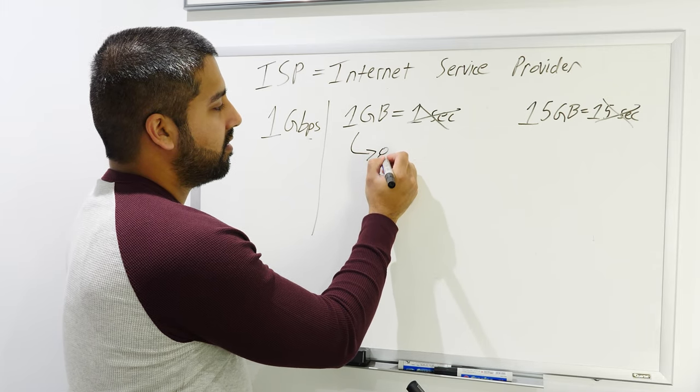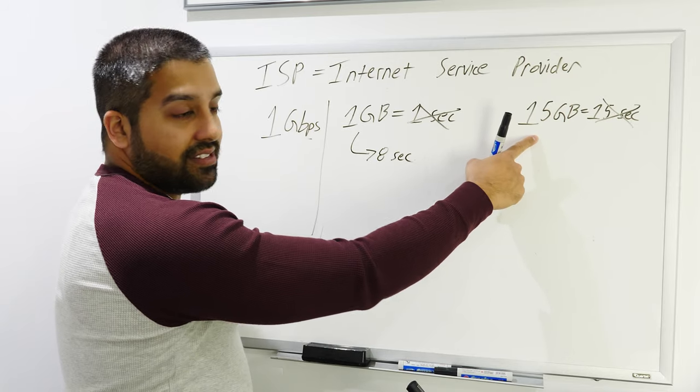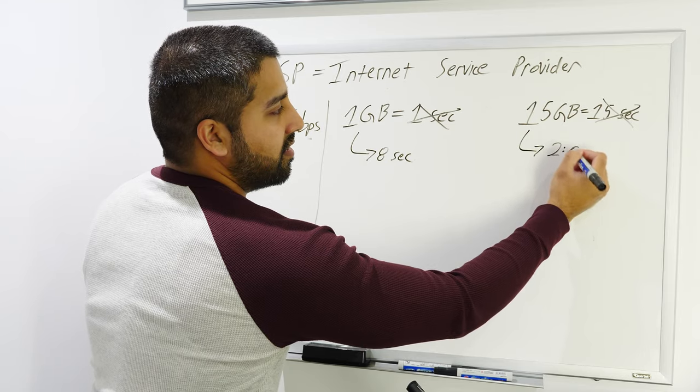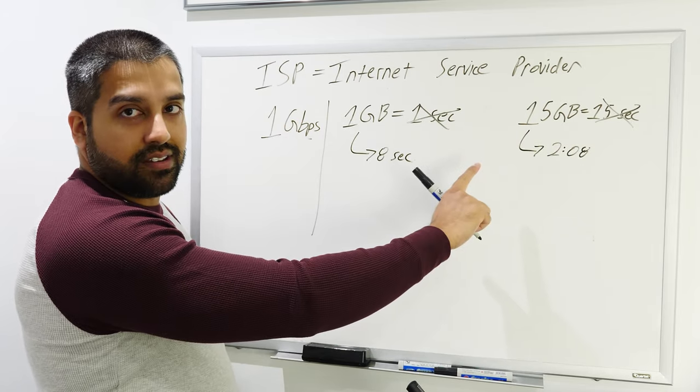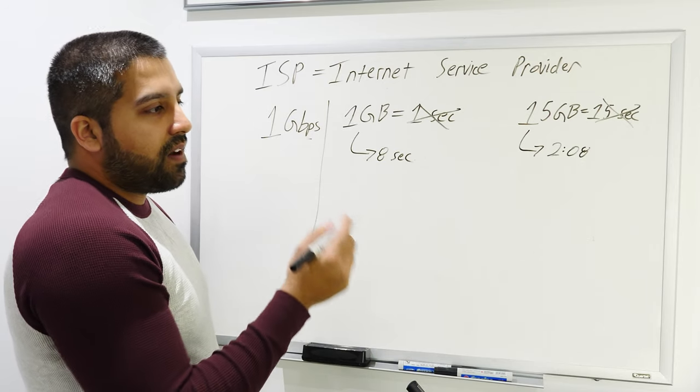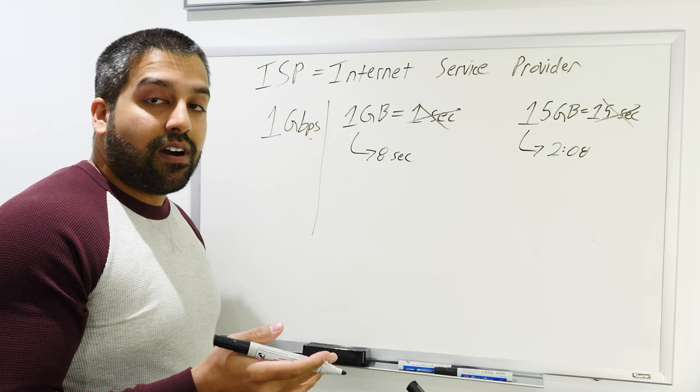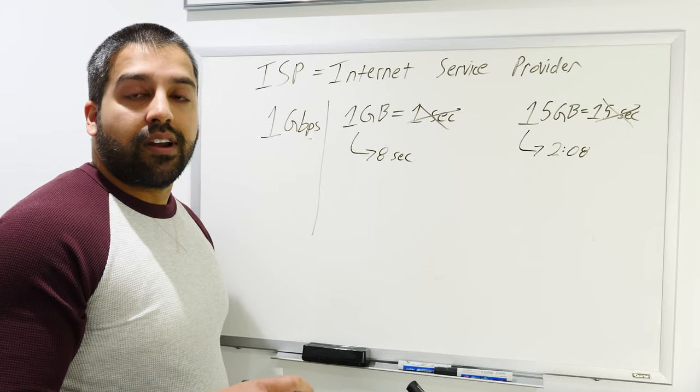That is actually 100% incorrect. That's not what this means. This means you will download this one gigabyte file in eight seconds, and it means you would download this 15 gigabyte file in two minutes. This is where people make the big mistake. Same thing if you have a 500 megabits per second download speed.